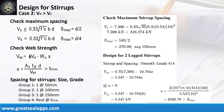The spacing of stirrups are as follows: one at 50 mm, one at 100 mm, rest at 150 mm.